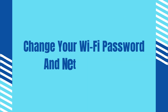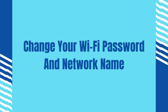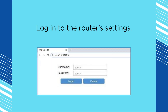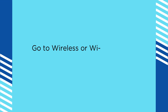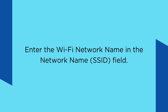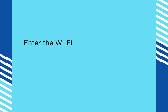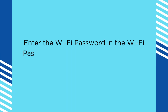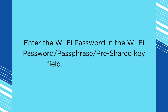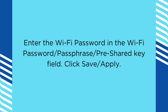To change your Wi-Fi password and network name, login to the router's settings and go to wireless or Wi-Fi settings. Enter the Wi-Fi network name in the network name (SSID) field. Enter the Wi-Fi password in the Wi-Fi password/passphrase/pre-shared key field. Click save or apply.